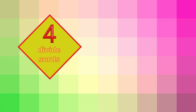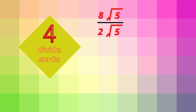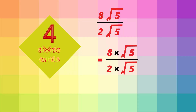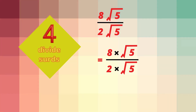Now let's divide surds. What is 8 root 5 divided by 2 root 5? Notice that root 5 is on the top and on the bottom of this fraction, so we can divide them. We divide root 5 on the top by root 5 on the bottom. What's left is 8 divided by 2, so the answer is 4.